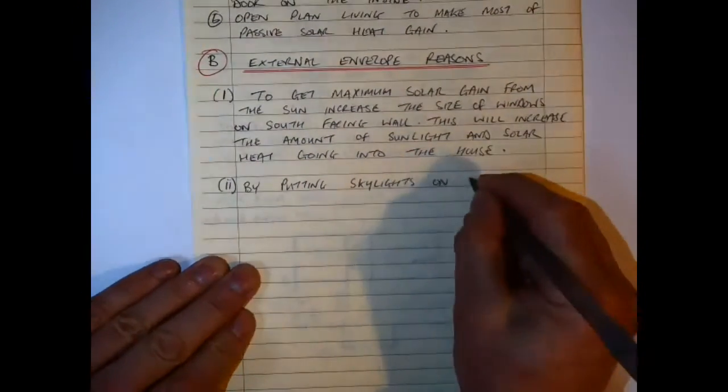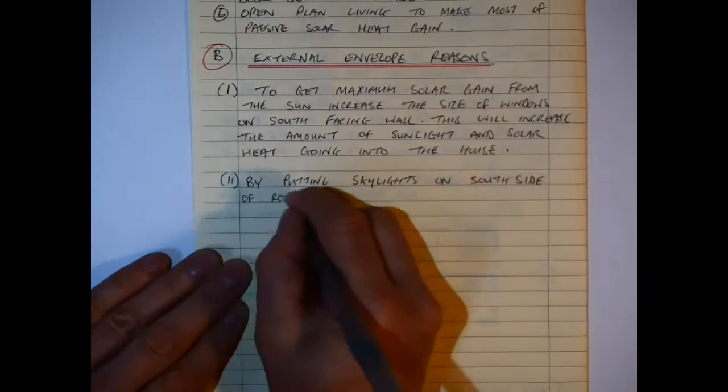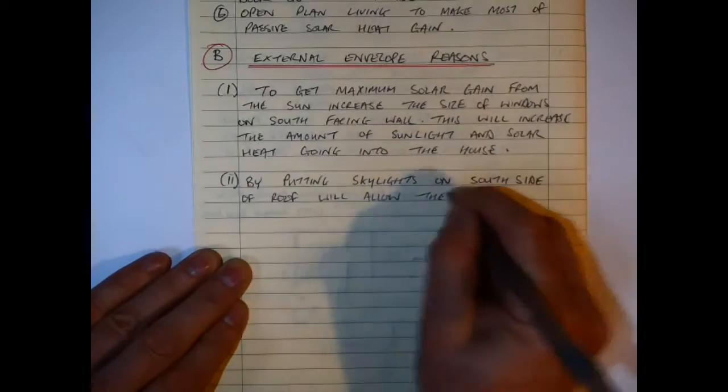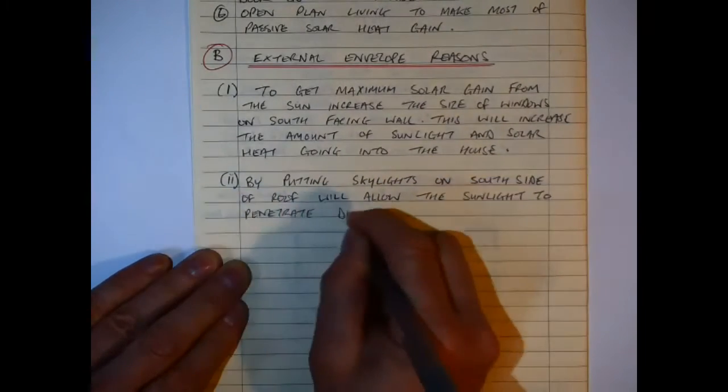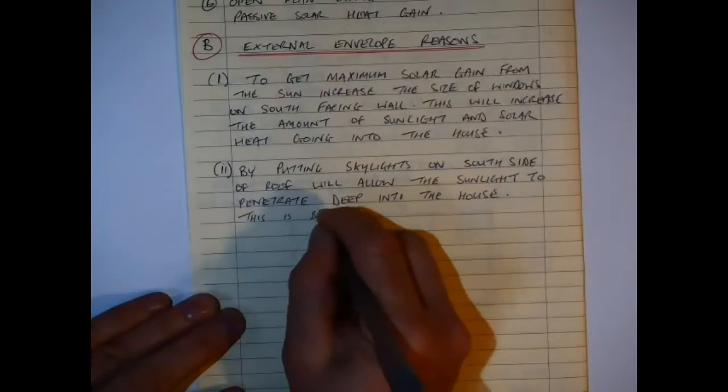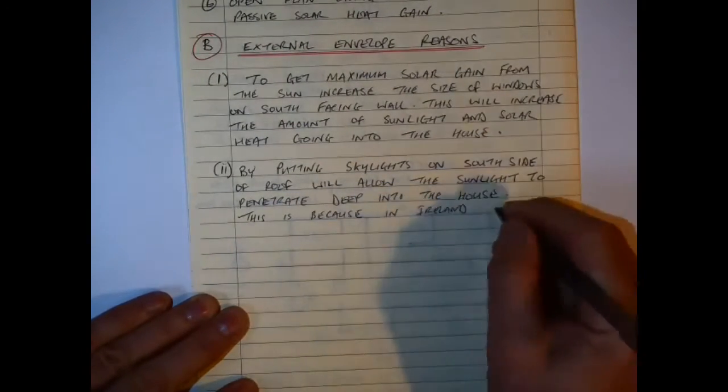The second point that I'm making here then is by putting skylights on the south side of the roof, it will allow sunlight to penetrate deep into the house. And because Ireland's sun rises in the east, sets in the west, as everywhere else does, it's always strongest in the south.